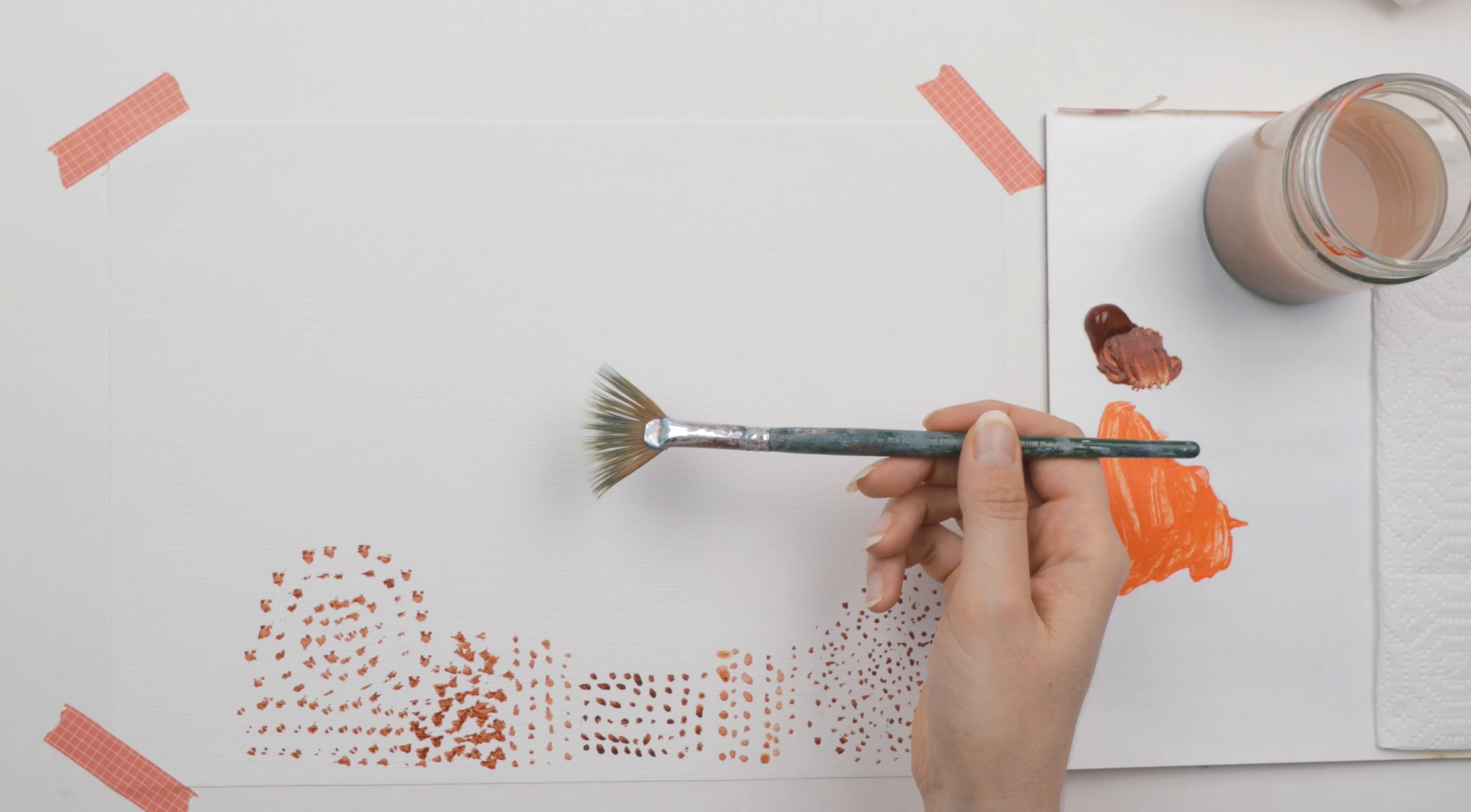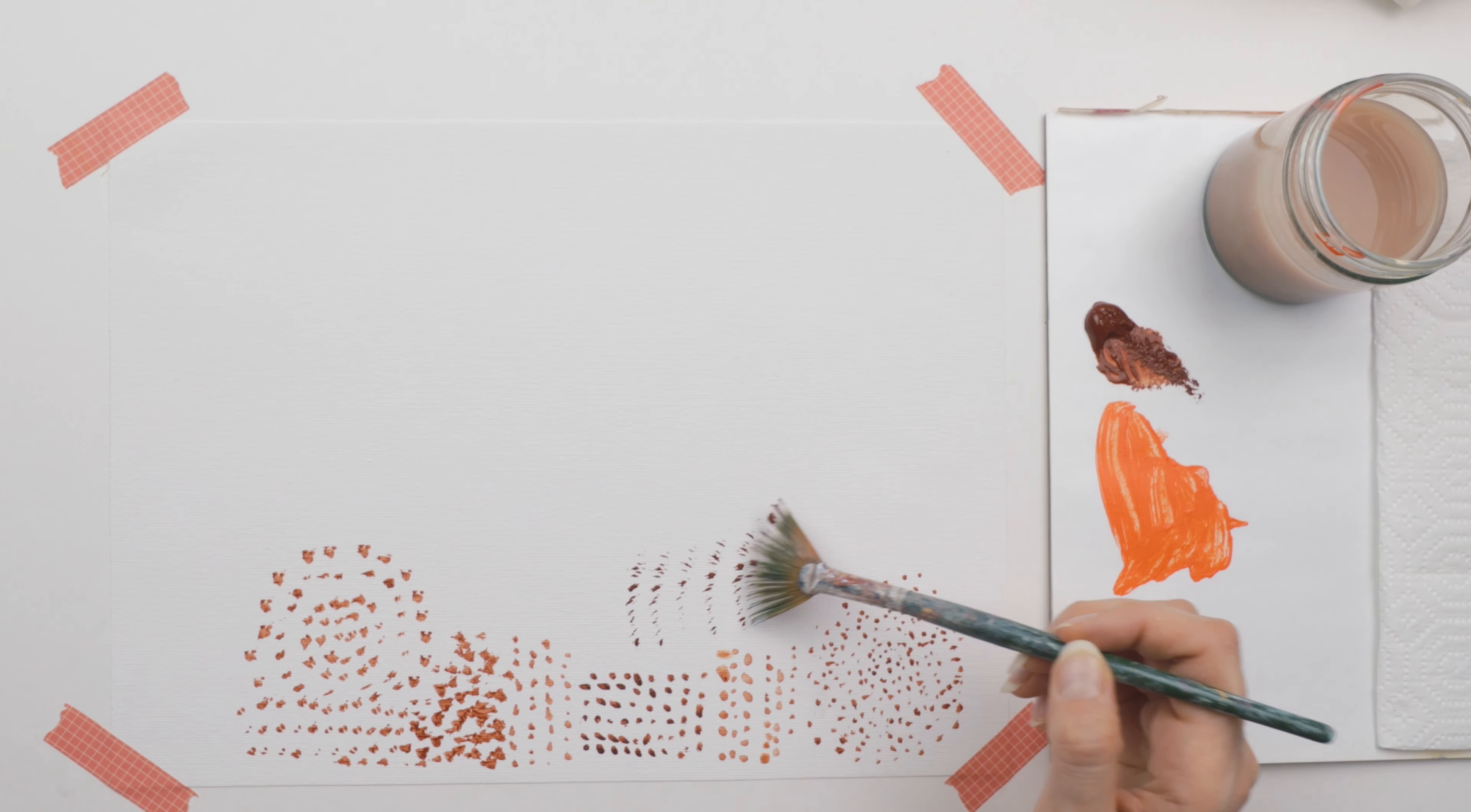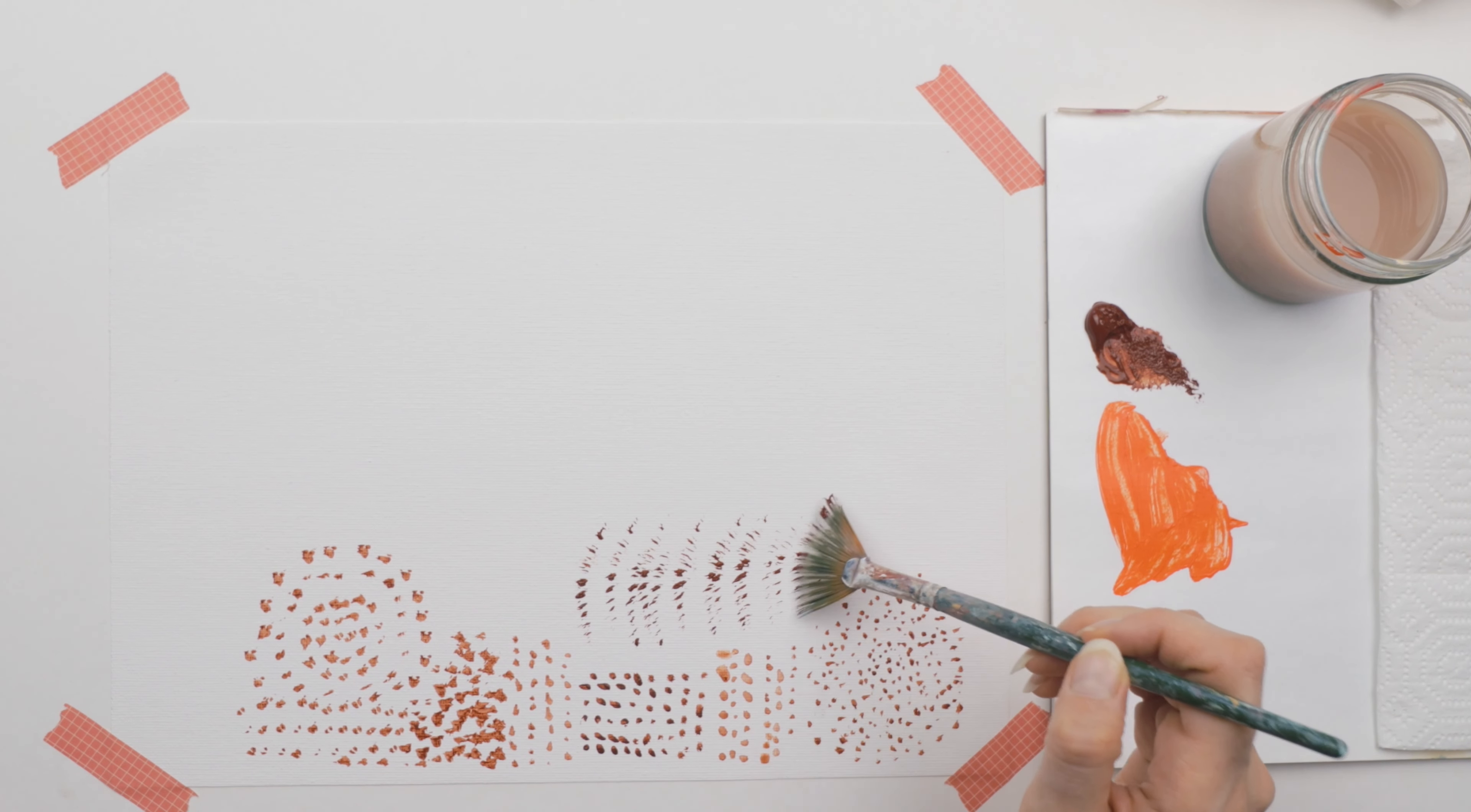For the fan brush, I like to get all sides dipped in the paint for an even layer. The fan brush is kind of like a cheat way to do pointillism. You will see the fan brush shape as you go to put your dots. So it's not as nice looking as the individual dots, in my opinion.